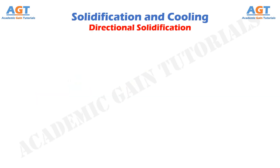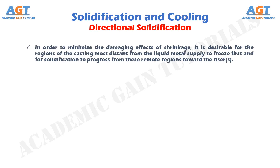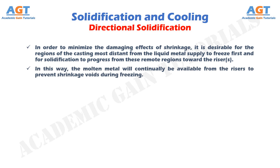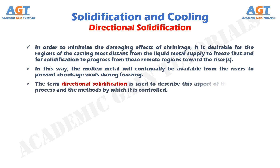Directional solidification. In order to minimize the damaging effects of shrinkage, it is desirable for the regions of the casting most distant from the liquid metal supply to freeze first, and for solidification to progress from these remote regions toward the riser. In this way, the molten metal will continually be available from the risers to prevent shrinkage voids during freezing. The term directional solidification is used to describe this aspect of the freezing process and the methods by which it is controlled.